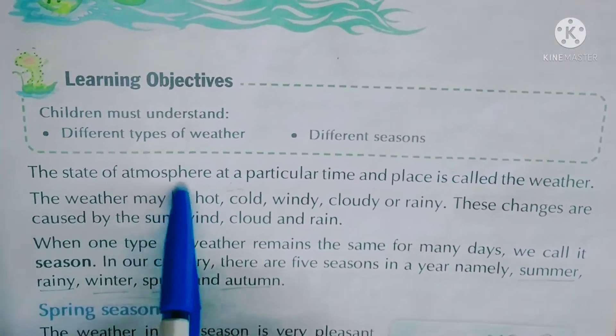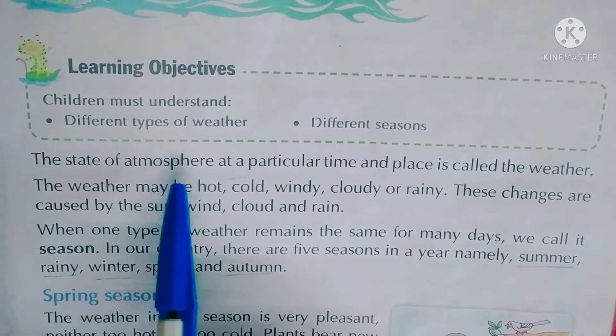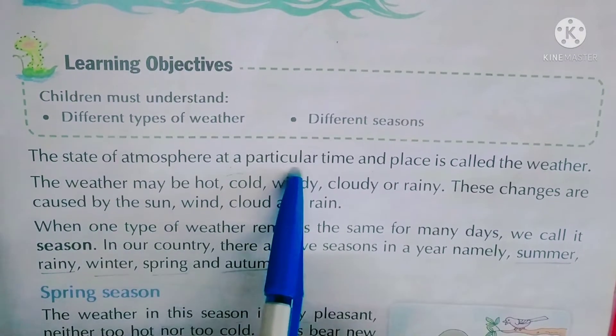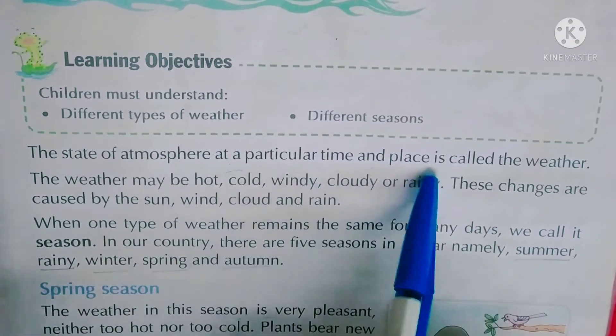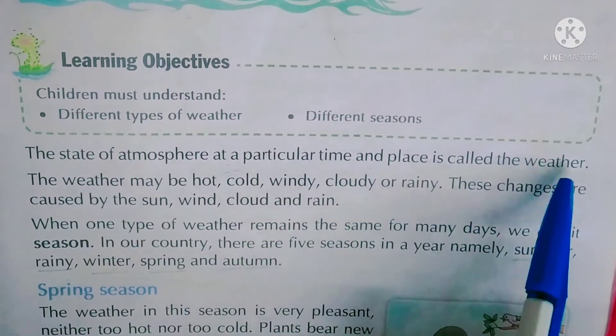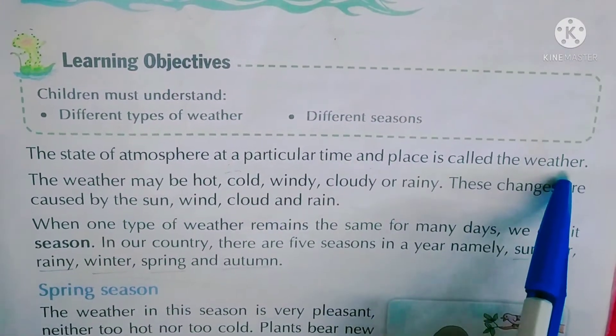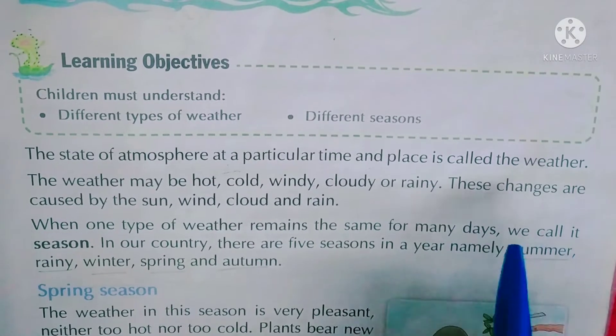The state of atmosphere at a particular time and place is called the weather. किसी एक जगह का, एक जैसा वातावरण एक समय में, वो क्या कहलाता है - वहाँ का मौसम कहलाता है। वो कोई भी जगह हो सकती है।